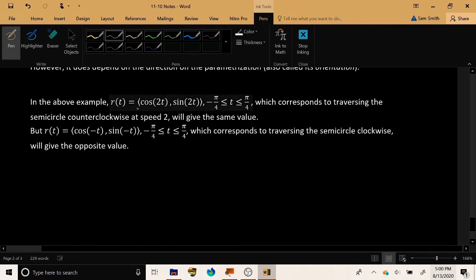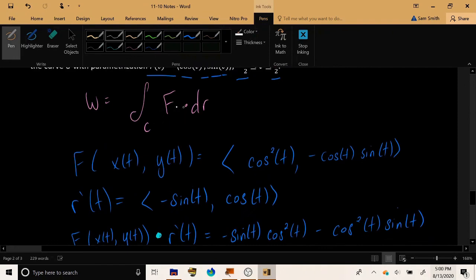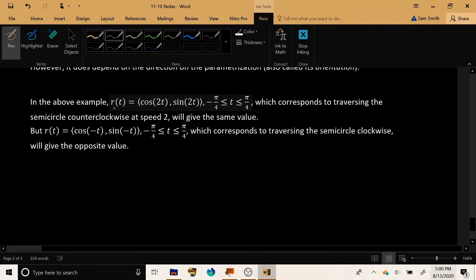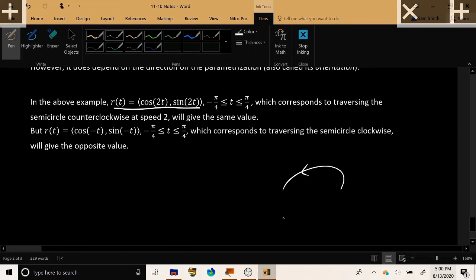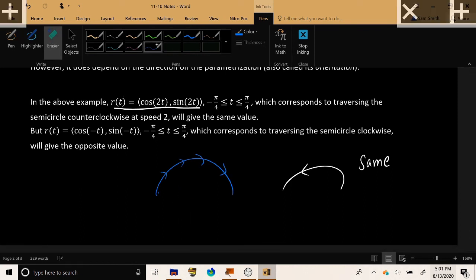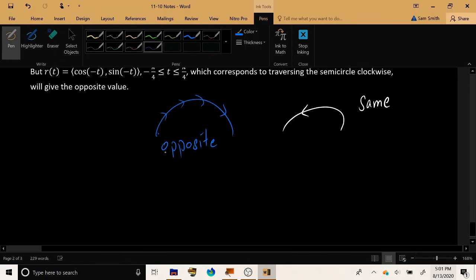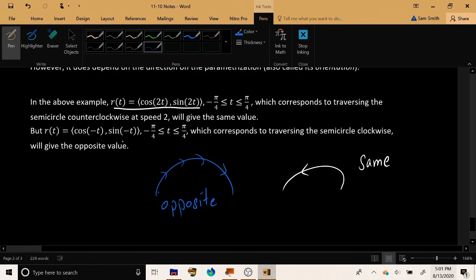For example, if you decided to parameterize the circle in the previous example, this circular path here, if you decided to parameterize it with a different curve, different parameterization, but which is still going counterclockwise, then you'll get the same outcome. But if it traverses it clockwise, this is opposite outcome. It will become negative of what it was before. Okay, so respect the orientation of the curve that's given to you. Make sure that your parameterization respects that orientation, or you're going to get the opposite of the correct answer.